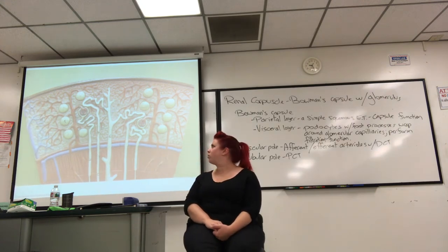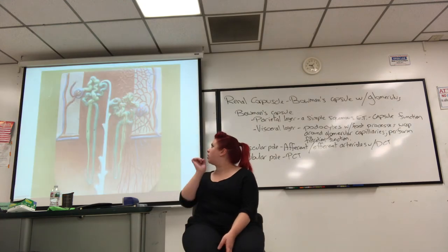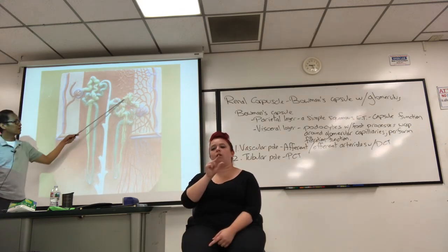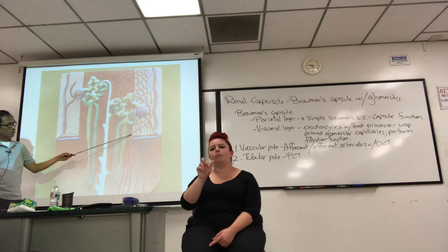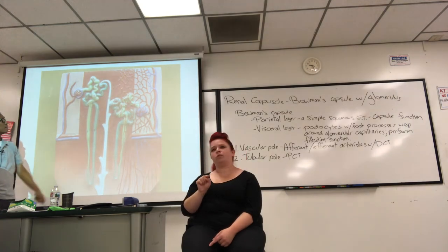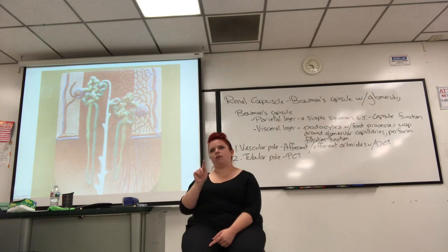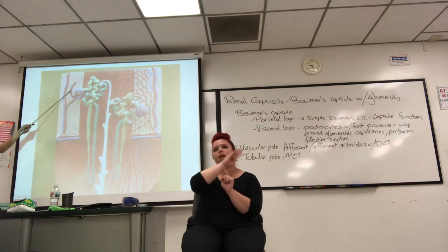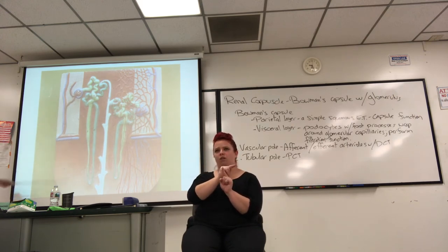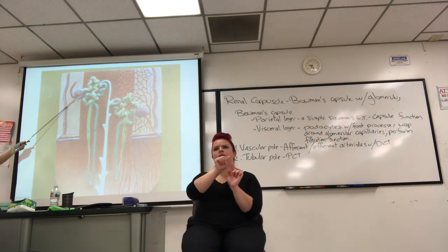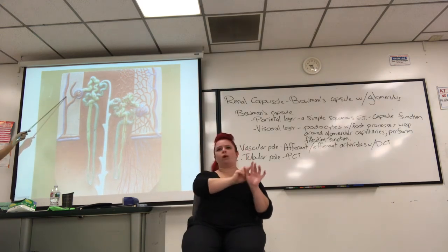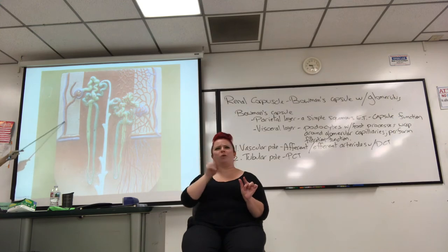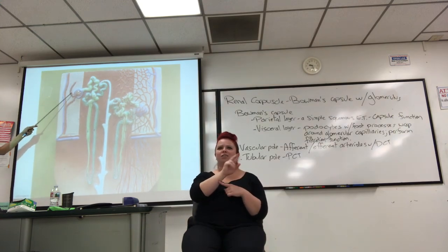Let's start with our three capillary beds. Glomerulus — what's the one up here? Peritubular. What are the ones down there? Vasa recta. If you do your vascular pole/tubular pole thing: there's the vascular pole, that's the afferent arteriole, and that must be the efferent arteriole. How do I know? It branches off the interlobular. Afferent arteriole, efferent arteriole, glomerulus. Then PCT — loop — DCT — right into the collecting duct.